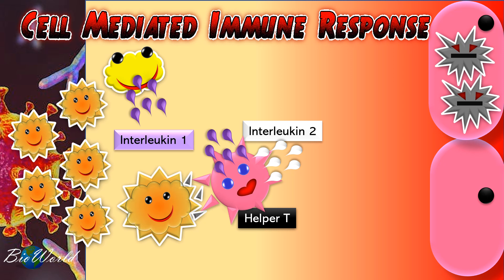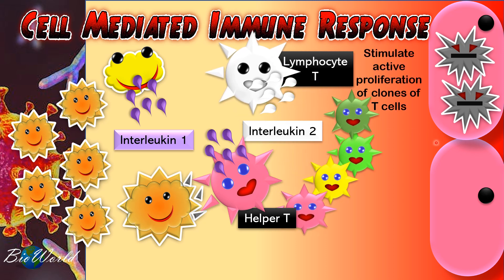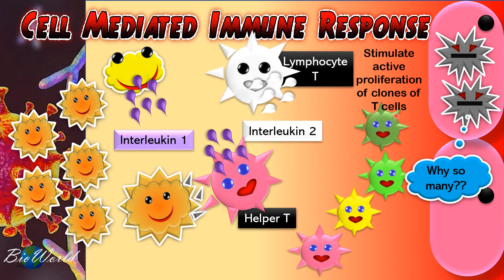Interleukin-2 acts on the lymphocyte T. Interleukin-2 will stimulate lymphocyte T to begin active proliferation of clones, and these clones then differentiate into four different cells. Let's find out the role of each of these cells.